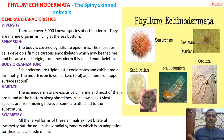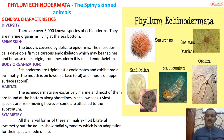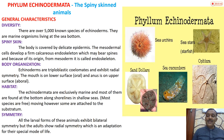Body organization: echinoderms are triploblastic. Their kingdom is Animalia, sub-kingdom Eumetazoa, division Bilateria. They exhibit radial symmetry. However, the radial symmetry is actually their secondary character - I have told you this several times.